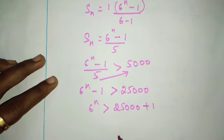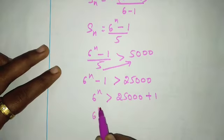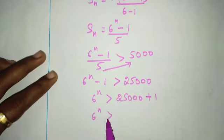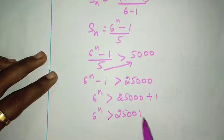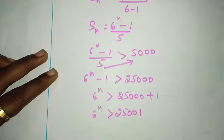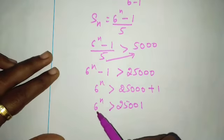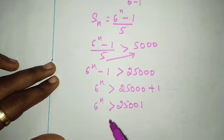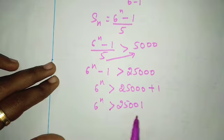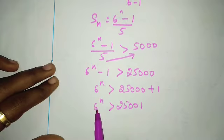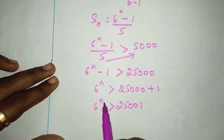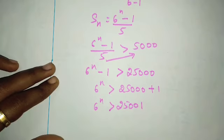After simplification, we get 6 power n greater than 25,000 plus 1, which is 25,001. So 6 power n must be greater than 25,001.